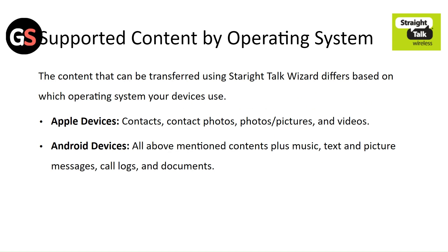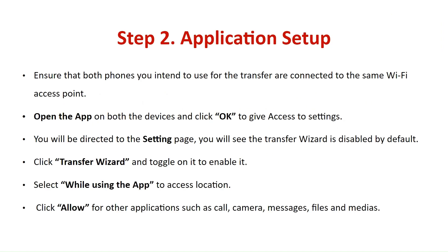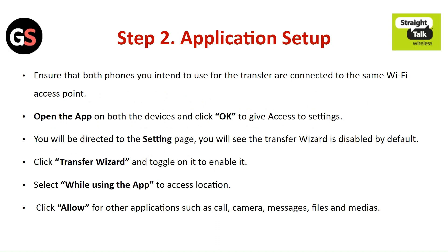Step 1: Download the app. Go to the App Store or Google Play Store based on your operating system. Search for the Straight Talk Transfer Wizard, click the install button next to the Straight Talk Transfer Wizard, and wait for the installation to complete.